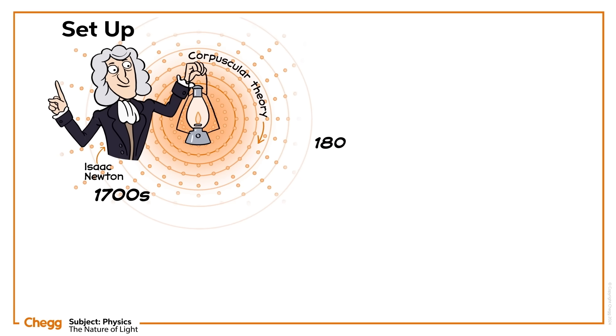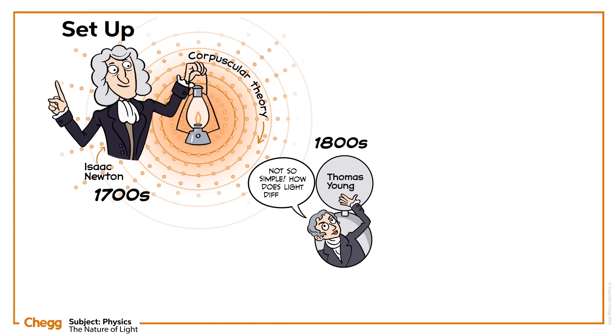But at the beginning of the 1800s people started to see holes in this corpuscular theory. An English physician and physicist showed us that light is not so simple. Thomas Young wanted to know what happens when light from two sources overlaps. How does light diffract?